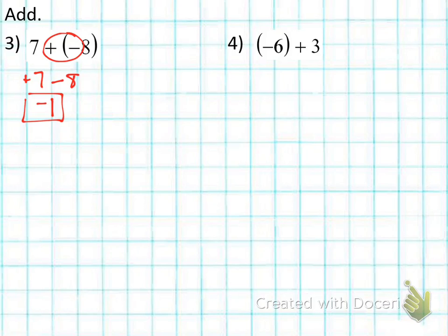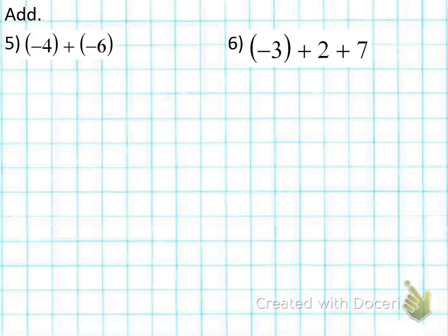Number 4, negative 6 plus 3, go. Number 5, we have negative 4 plus a negative 6. Positive and negative becomes negative, so negative 4 minus 6 again. Same sign, so we add them, we got 10. Bigger sign is 6, so it's negative 10.